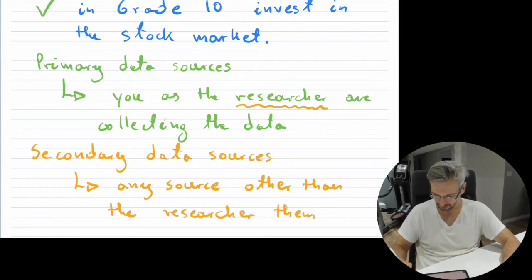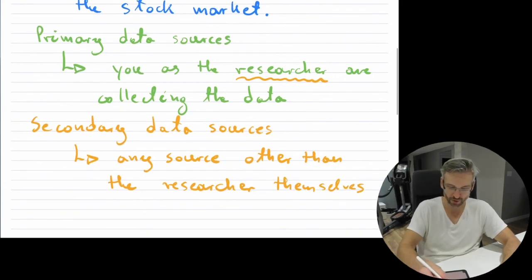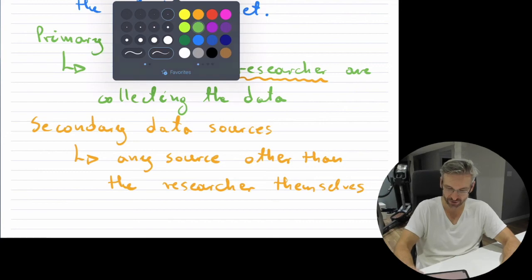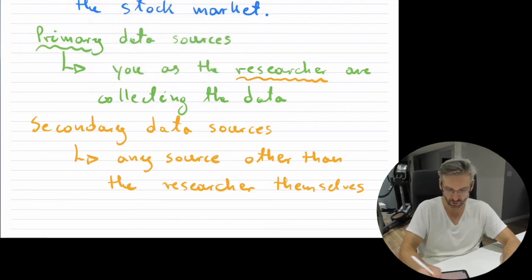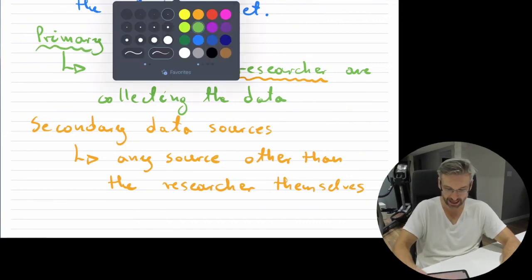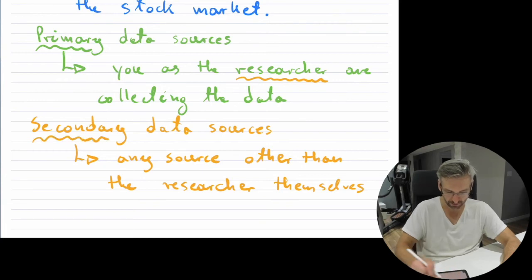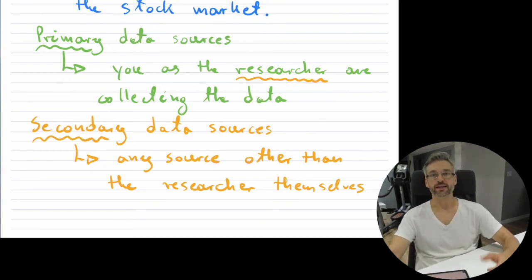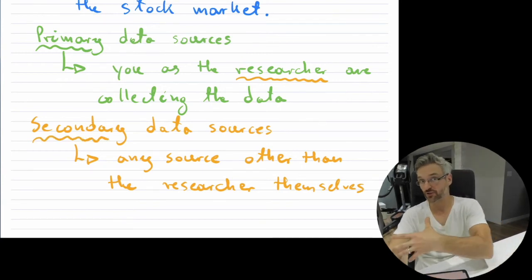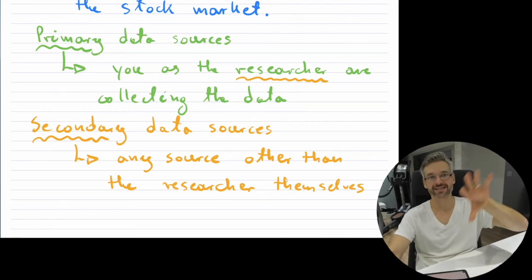Primary and secondary data sources are important to know when you are discussing actual collection of data, because you want to know, did I actually or did the researcher actually collect this, or was it a secondary source?